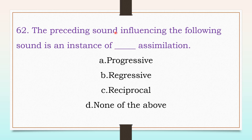The preceding sound influencing the following sounds is an instance of which type of assimilation? Options: progressive, regressive, reciprocal, or none of the above. The answer is A, progressive.